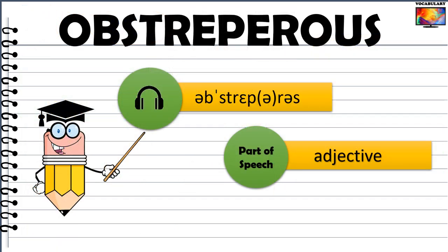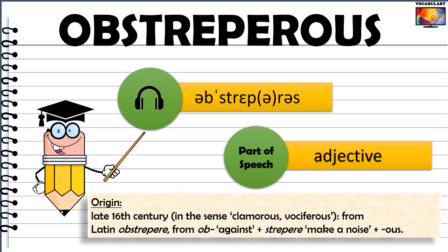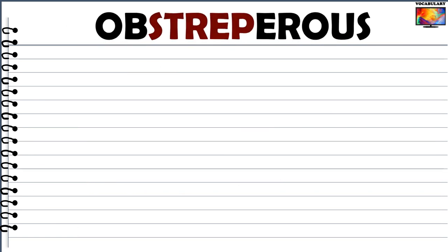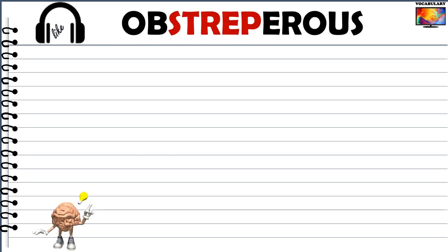Our next word is abstreperous, which is an adjective. This word is derived from the word roots streper meaning 'to make a noise' and the prefix 'ob' meaning against. So the word abstreperous literally means to make a noise, to rebel against something, much like a protesting crowd or an unruly child. A protesting crowd — one who are making a lot of noise and are difficult to control — is the best context to learn the meaning of abstreperous.